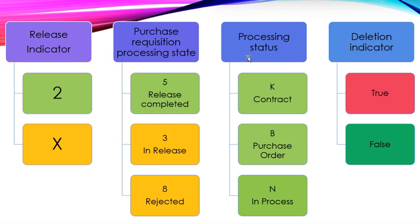K means that a contract has been raised, B means that a purchase order has been raised, N means that it is in process either contract or purchase order will be raised.